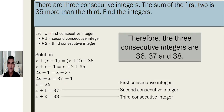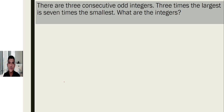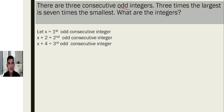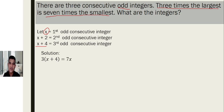Now let's have example number two: There are three consecutive odd integers. Three times the largest is seven times the smallest. What are the integers? The common difference between odd integers is two. So if we let x be the first odd consecutive integer, the next would be x plus two, and the third would be x plus four. The largest is x plus four, so three times the largest equals seven times the smallest, giving us: three times (x plus four) equals seven times x.